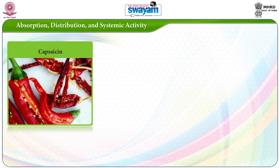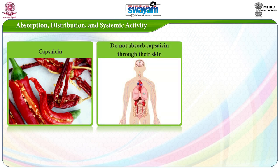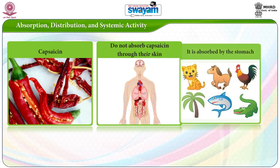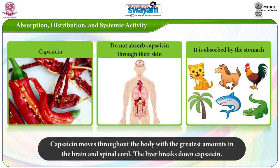Now let us study absorption, distribution and systemic activity. Humans do not absorb Capsaicin through their skin. In animals, Capsaicin is absorbed by the stomach. Capsaicin moves throughout the body with the greatest amounts found in the brain and spinal cord. The liver breaks down Capsaicin.